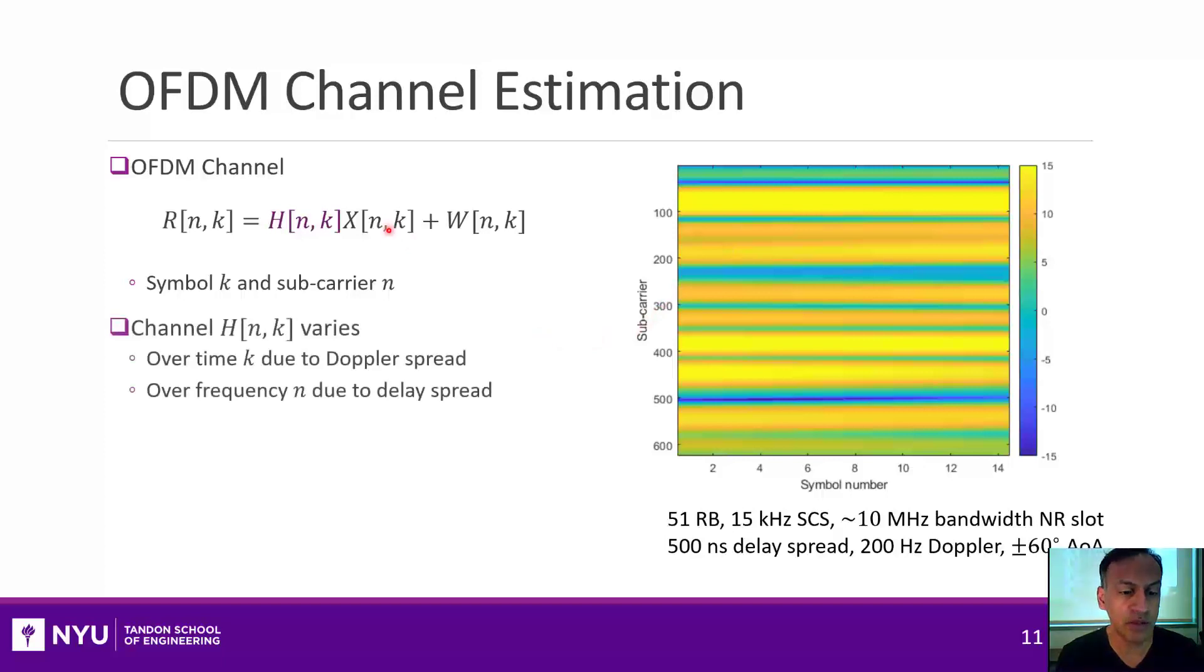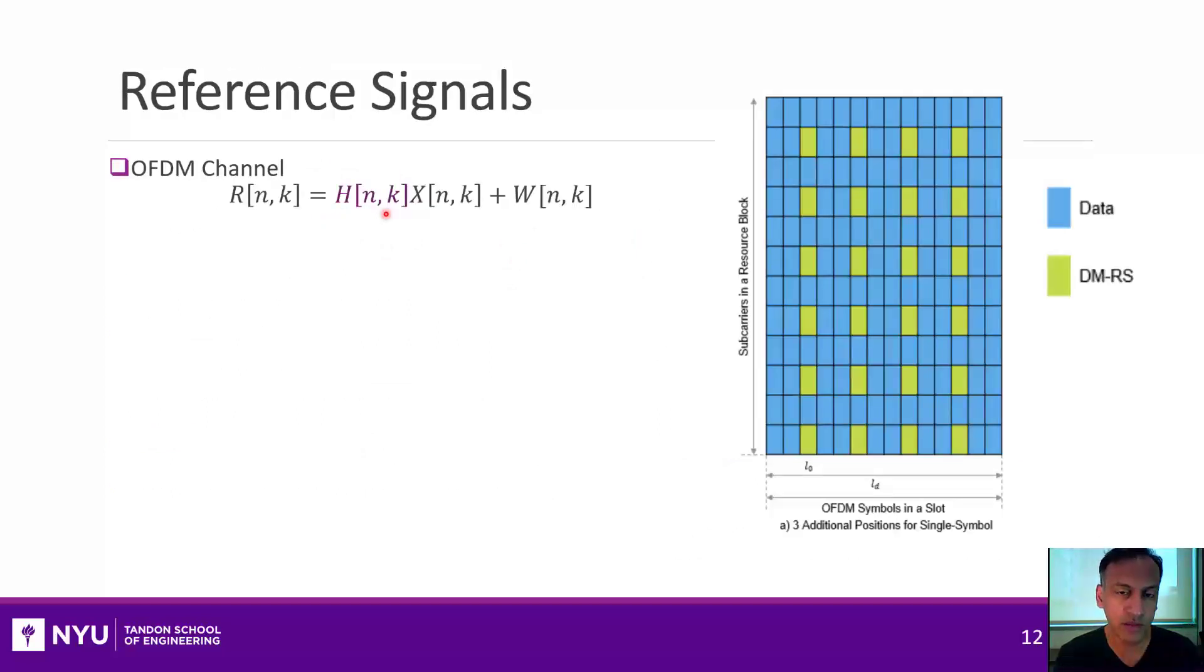Now, the problem is that we want to estimate this channel somehow, and we need to estimate that channel if we want to demodulate these symbols x[n,k]. So as I mentioned in the previous unit, what we need to do for that is to have something called reference signals. So this is the idea. This is our channel, and this is the received array, and the transmitted array, and our channel array, and we want to estimate this, which is highlighted in purple.